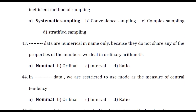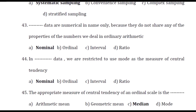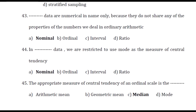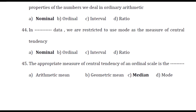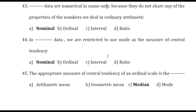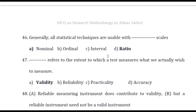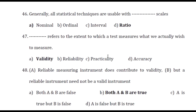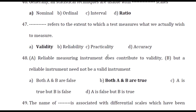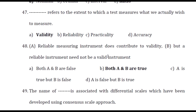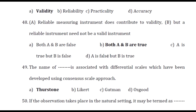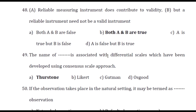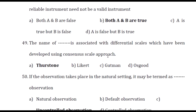Nominal data are numerical in name only because they do not share any of the properties of the numbers we deal with in ordinary arithmetic. In nominal data, we are restricted to use mode as the measure of central tendency. The appropriate measure of central tendency for an ordinal scale is median. Generally, all statistical techniques are usable with the ratio scale. Validity refers to the extent to which a test measures what we actually wish to measure. A reliable measuring instrument does contribute to validity, but a reliable instrument need not be a valid instrument. The name of Thurstone is associated with differential scales.